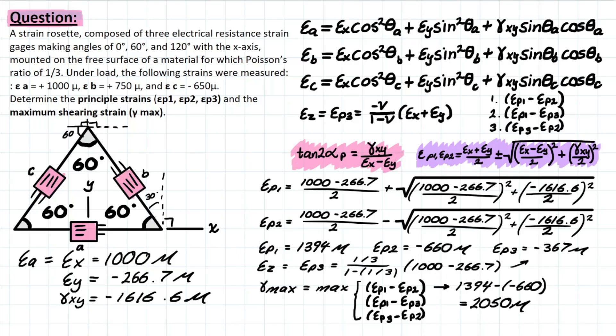However, when you do epsilon_p1 minus epsilon_p2, you're going to be left with a formula that looks like this. So 1,394 and then minus negative 660. Those two are going to be added together to give you 2,050 as your final answer for the max shearing strain. And then you also have all of your final answers for principal strains as well.